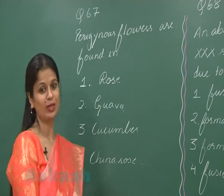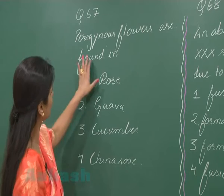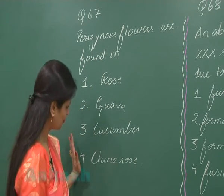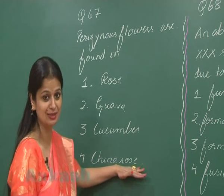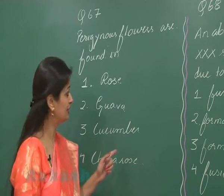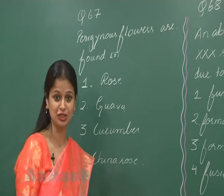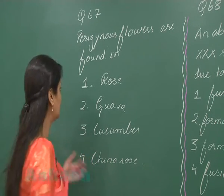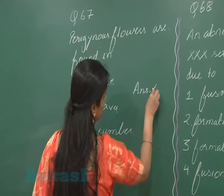Let's discuss question number 67: perigynous flowers are found in which plant? In China rose there is a hypogynous condition, in cucumber and guava there is an epigynous condition, and in rose there is a perigynous condition in which the ovary is half superior and half inferior. So the right option is option number one.